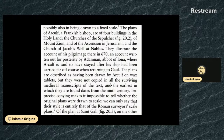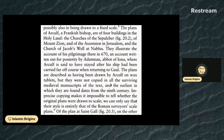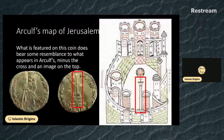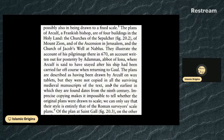The plans are described as having been drawn by Arculf on wax tablets, but they were not copied in all surviving medieval manuscripts of the text. The earliest manuscript in which they are found dates from the ninth century. Imprecise copying makes it impossible to tell whether the original plans were drawn to scale. We can only say that their style is entirely that of the Roman surveyors' scale plans.